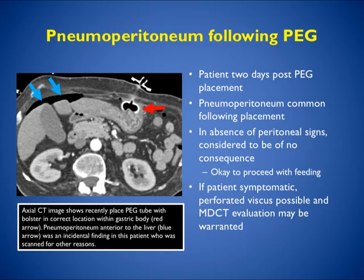Here's an example of a patient two days post-PEG placement with pneumoperitoneum. This will typically resolve. In the absence of peritoneal signs, as long as you're comfortable the tube is in place, you can go ahead and feed the patient. If the patient is symptomatic, perforated viscus is possible and CT is very helpful. In this case, the PEG tube with bolster is in the correct position in the gastric body, and the pneumoperitoneum adjacent to the liver is an incidental finding that will soon resolve.